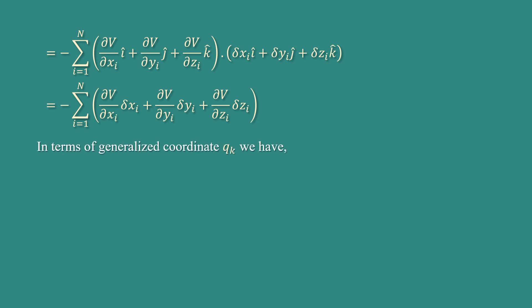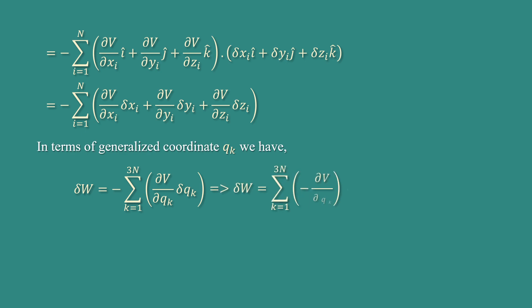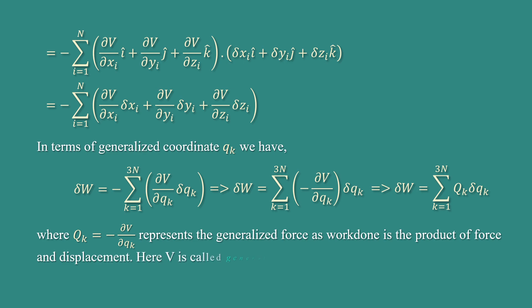In terms of generalized coordinate q_k, we have delta W equal to minus summation k goes from 1 to n, del V/del q_k into delta q_k, which implies delta W equal to summation k goes from 1 to 3n of Q_k into delta q_k, where Q_k equal to minus del V/del q_k represents the generalized force. Here V is called the generalized potential for a conservative system.